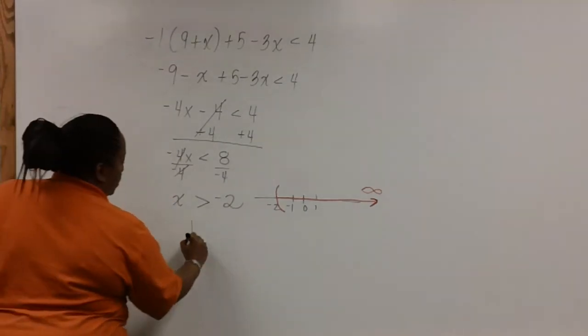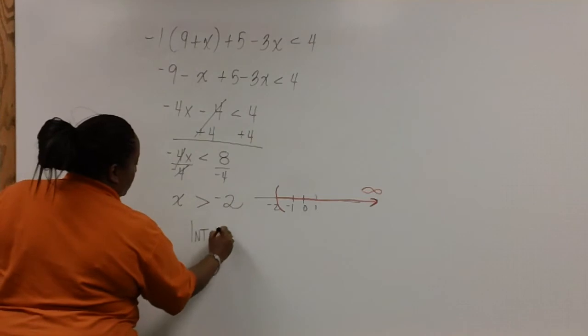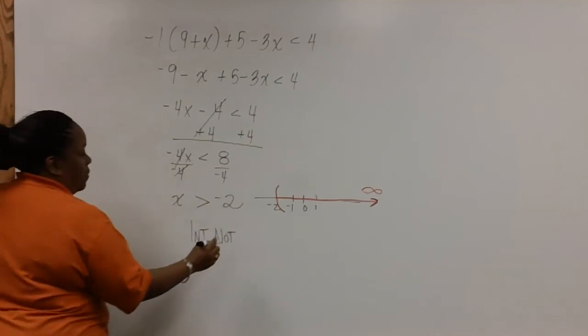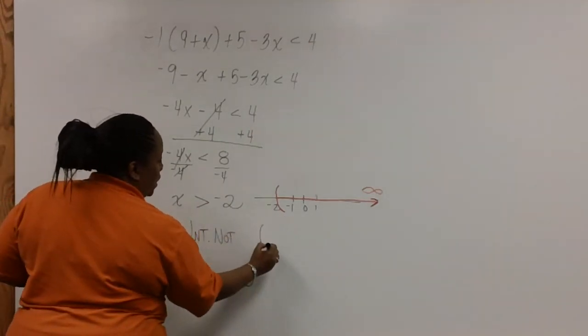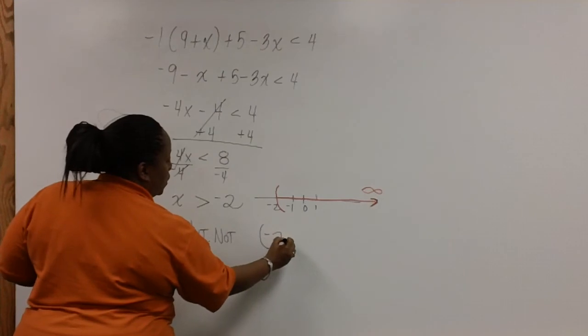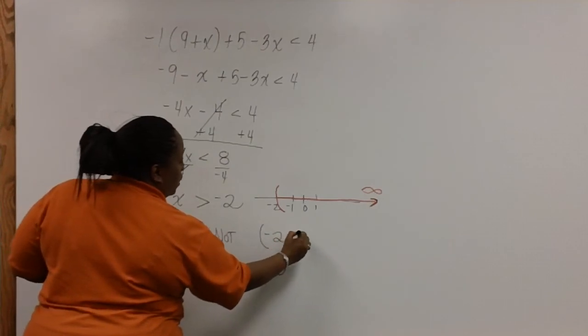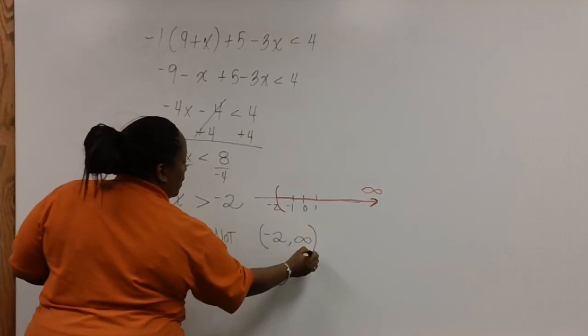Interval notation looks just like the graph. So from left to right, we have a parenthesis on negative 2, comma, and it's going to positive infinity.